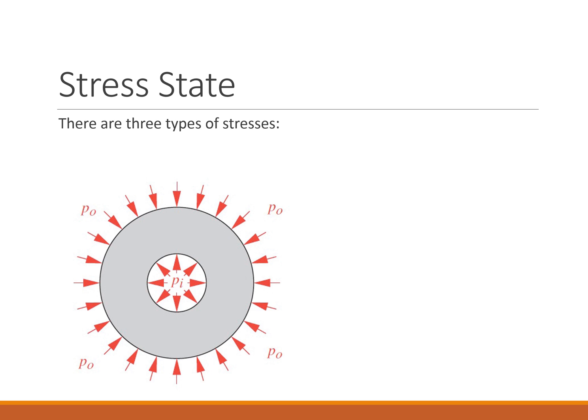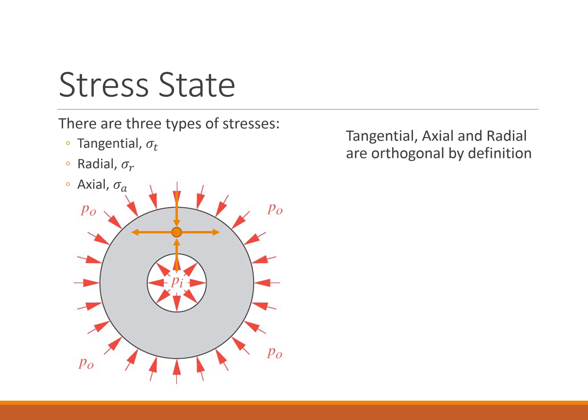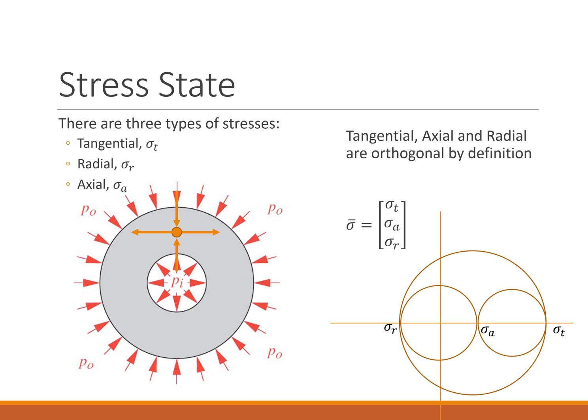In review, the stress state has three types: the tangential stress, the compressive radial stress, and the axial stress going into and out of the slide. By definition, the tangential, axial, and radial are orthogonal to each other, which means they are the actual principal stress state. We can draw a Mohr's diagram: sigma R will probably be compressive, sigma A will be in tension, and sigma T will be in tension. The worst case — the place to consider for failure — will be occurring on the inside edge.